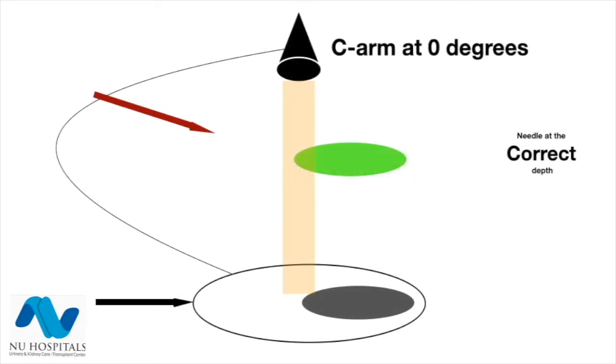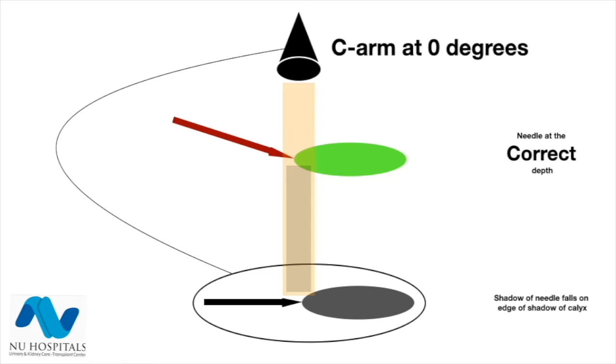Let us first see what happens when your C-arm is at zero degrees with the needle pointing at the correct depth. Remember what we are interested in is the relationship between the tip of the needle and the edge of the calyx. As the needle moves to reach the edge of the calyx, the shadow of the needle will touch the edge of the shadow of the calyx.